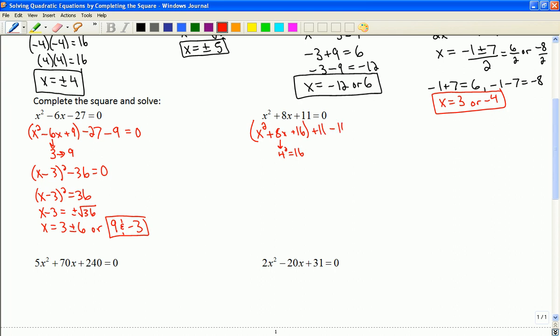But I have to subtract the same 16 in order to balance my equation. So this will be x plus 4 all squared minus 5 equals 0. And then I can remove the 5, put it on the other side.